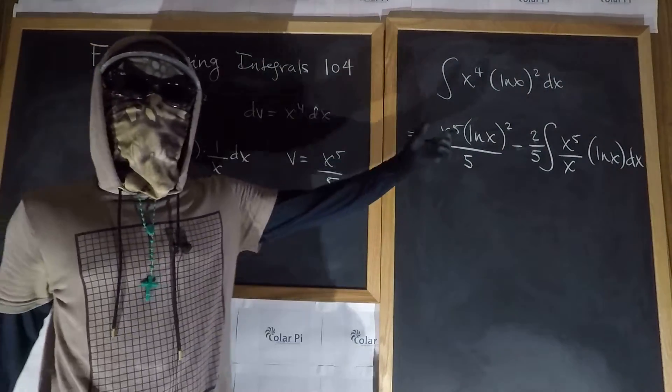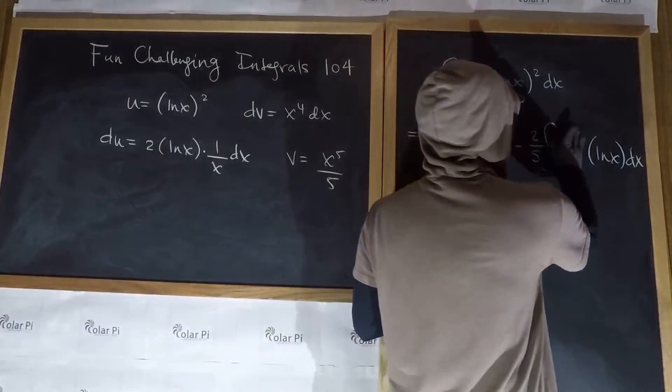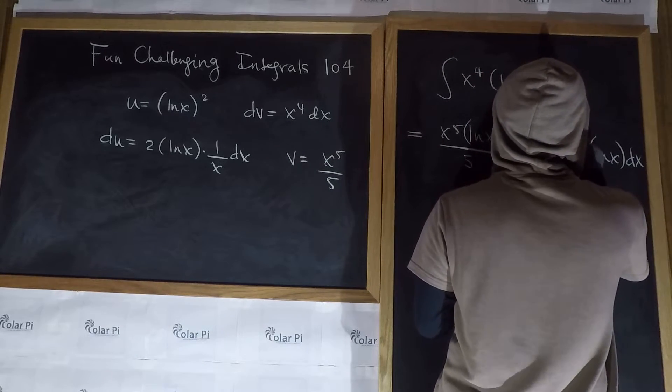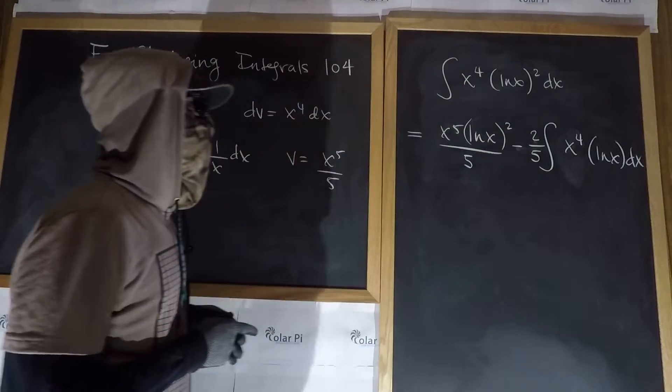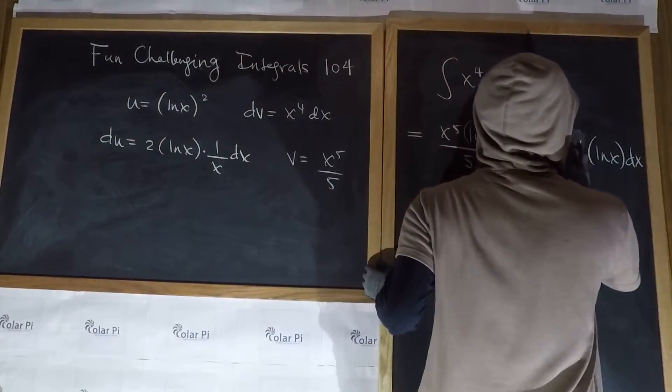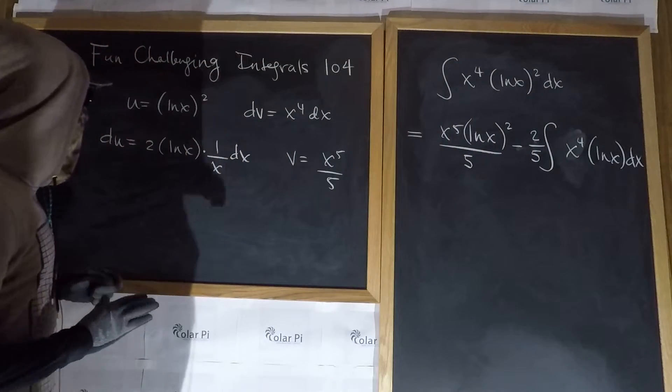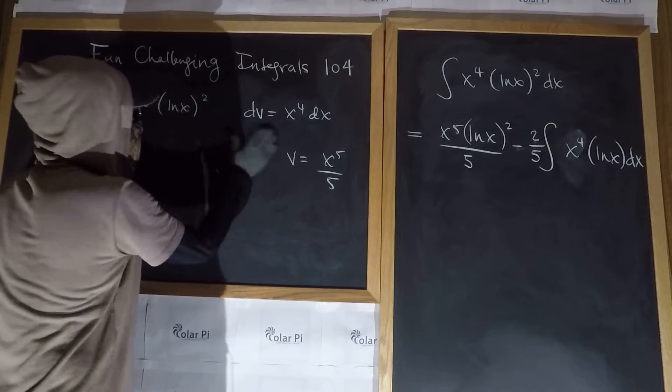Cool. Now x to the fifth over x is just x to the fourth, so this here is just x to the fourth. Okay, so now what?